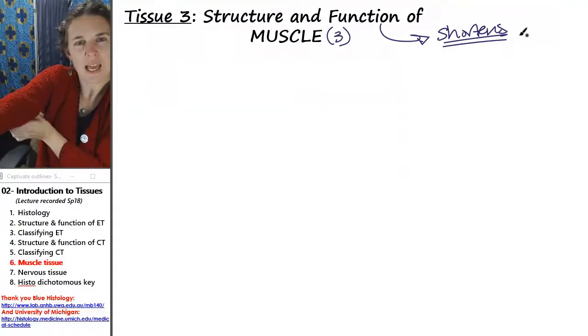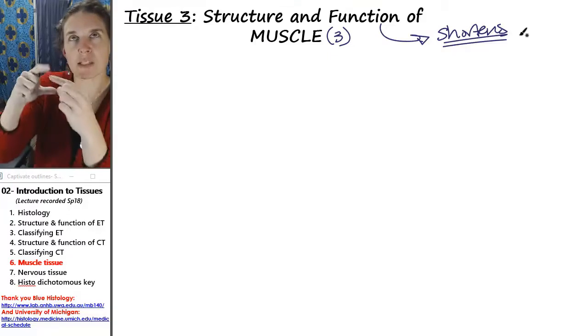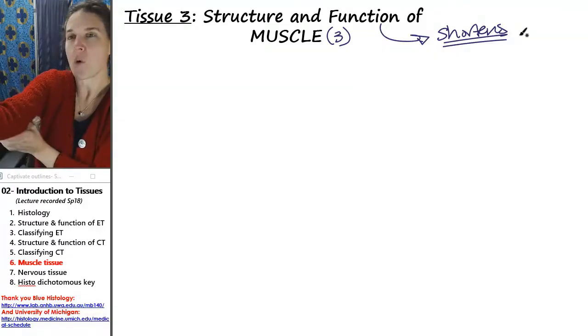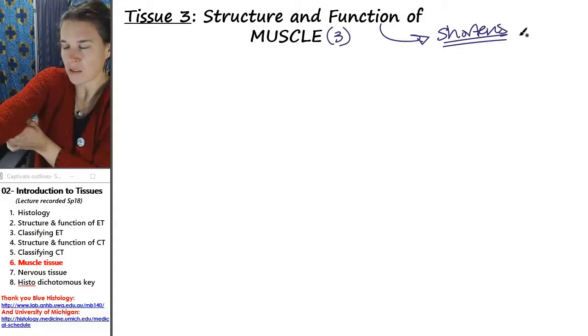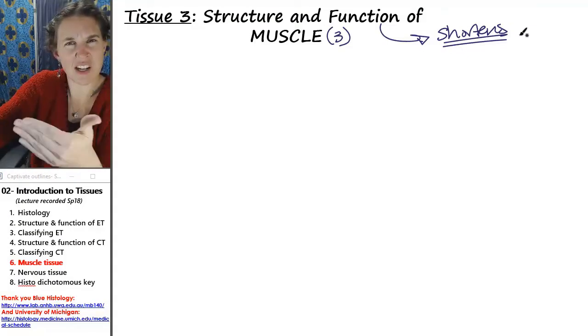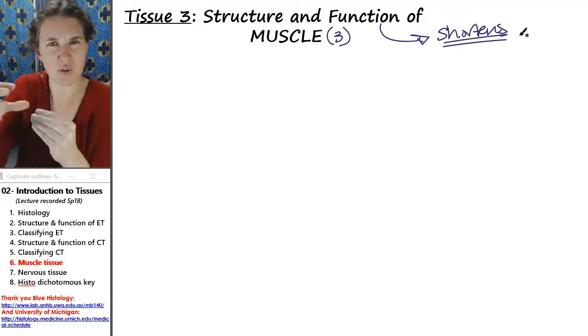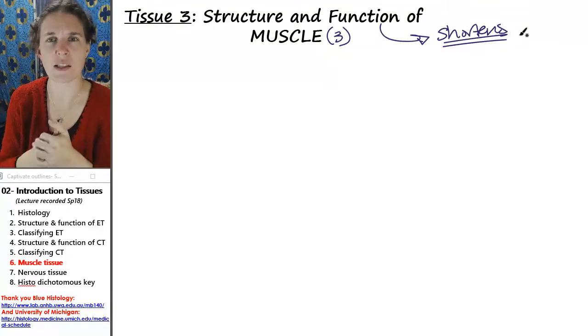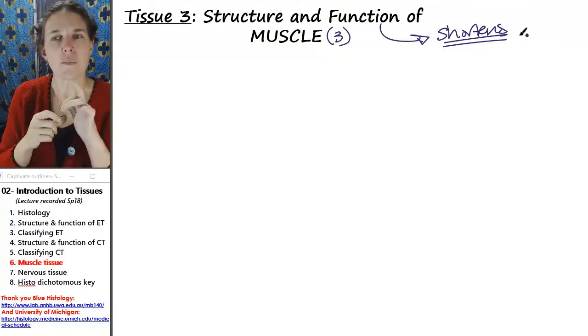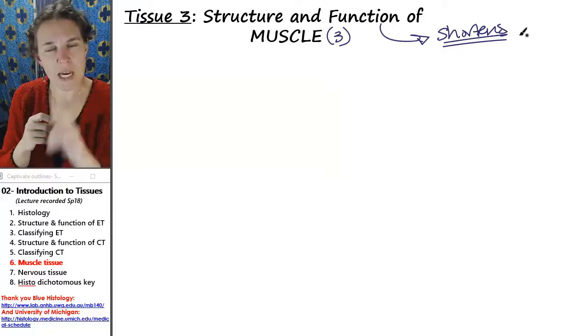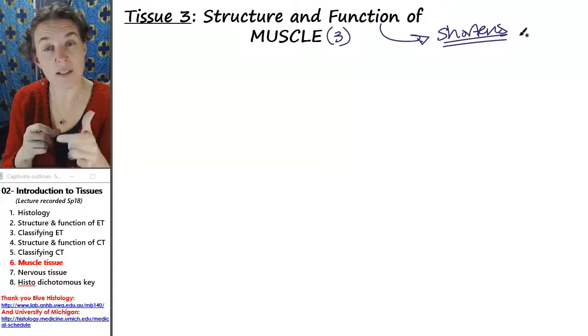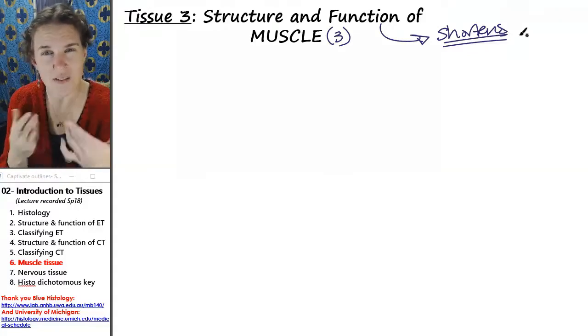And that's because your muscle tissue only contracts. So if you want to relax a muscle or stretch it back out again, you have to have another muscle to actually do contraction to sort of counterbalance that. Because it shortens, it always causes movement of something.